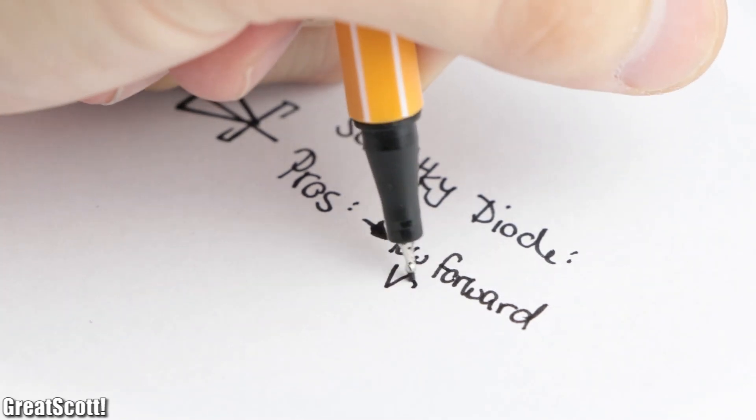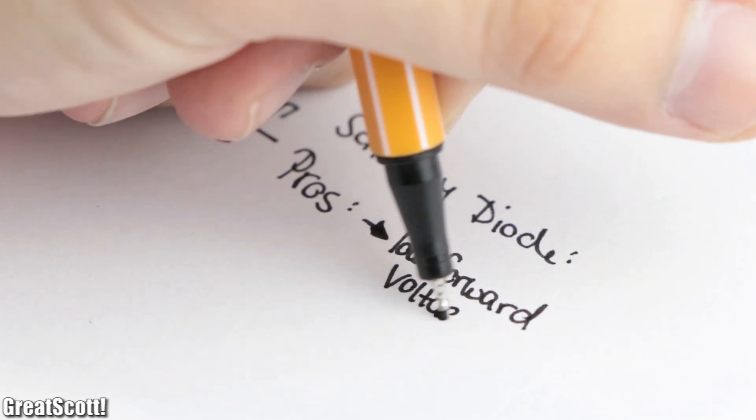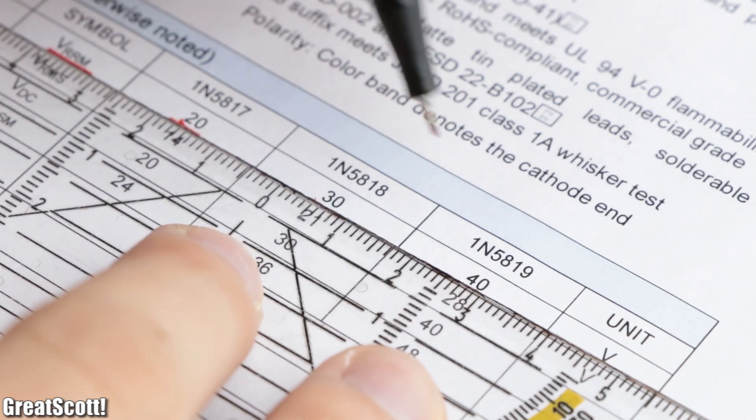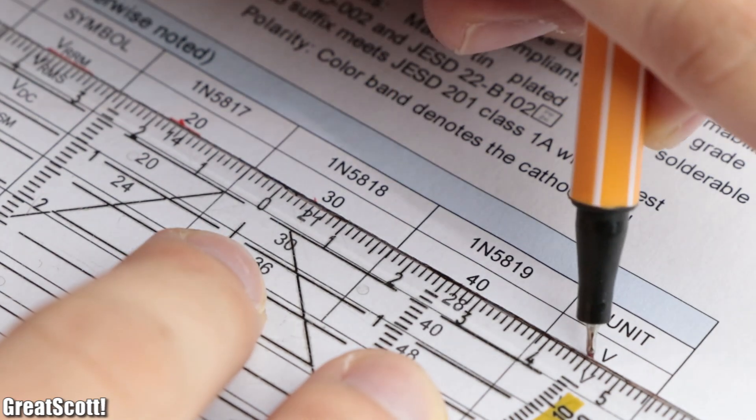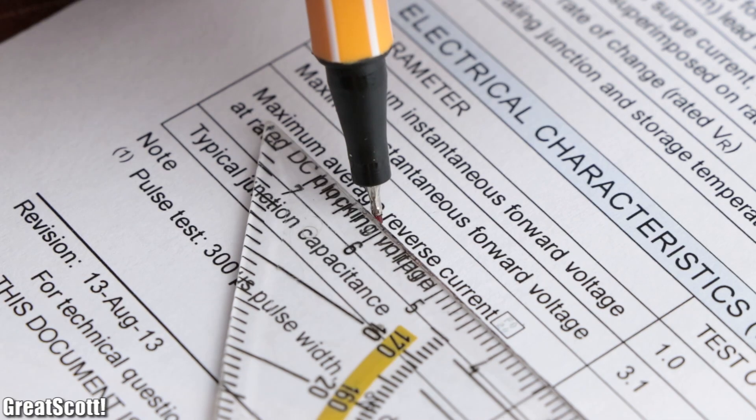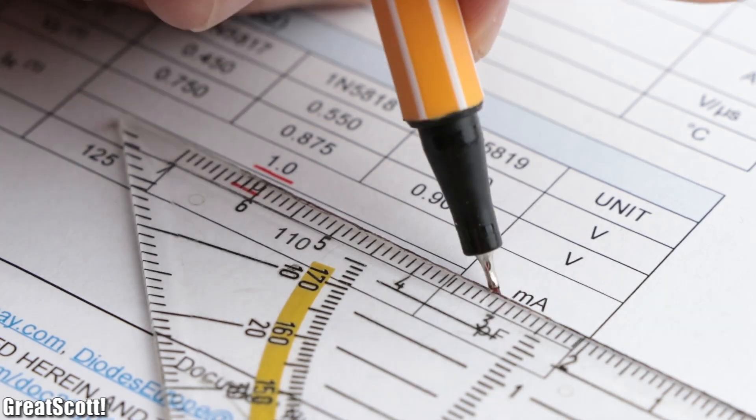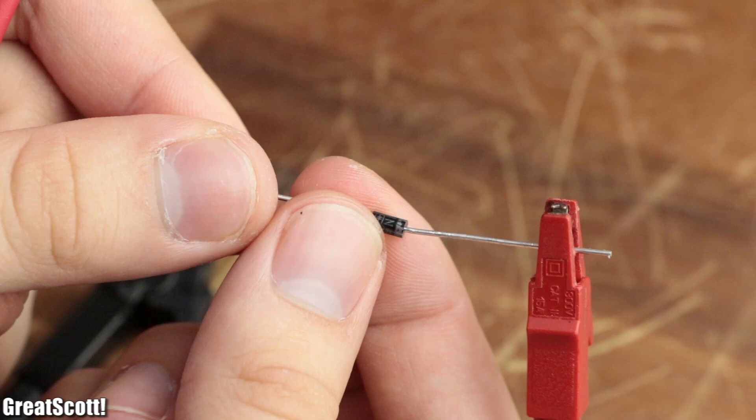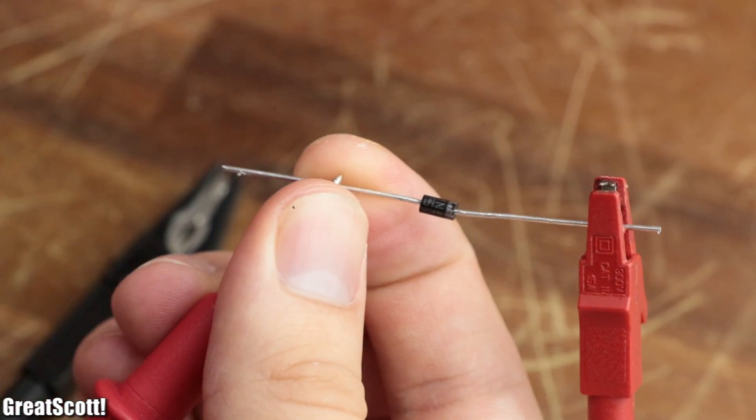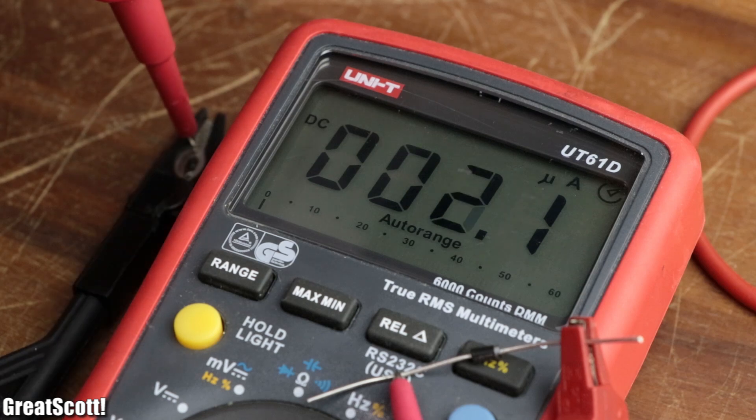So in conclusion, Schottky diodes have a low forward voltage drop and can switch very fast. The only negative aspects about them is that their blocking voltage can be rather low in comparison to common diodes, and that their reverse leakage current can reach a relatively high value. But if that does not matter for your circuits, then Schottky diodes can be very useful and often even mandatory.